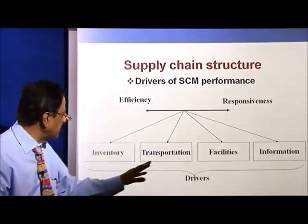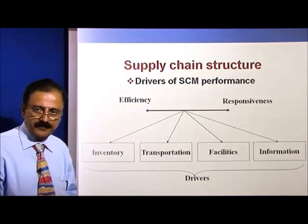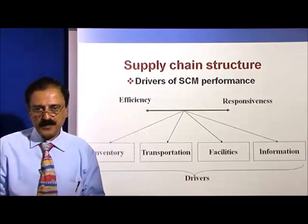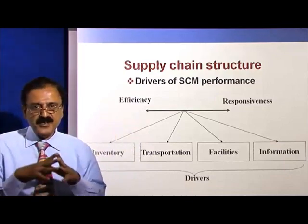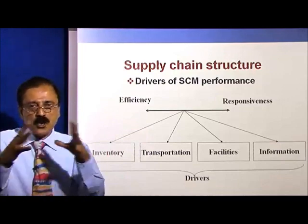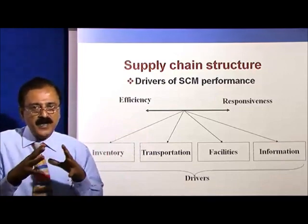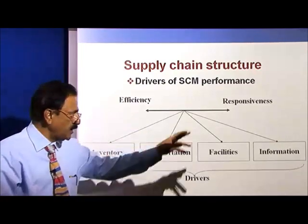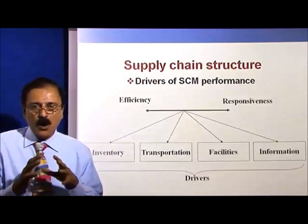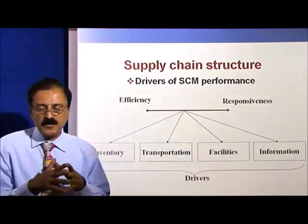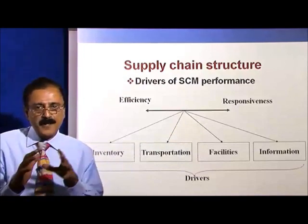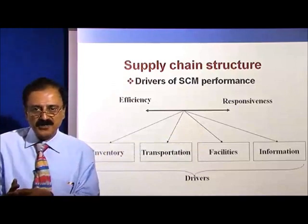There are four factors. The first being inventory. If you take the efficiency-based, which is cost-based, inventory levels are in anticipation — stocks have to be stored. But if you look at the responsive stage, inventory levels all operate on the basis of just-in-time; you have an efficient vendor management information system.